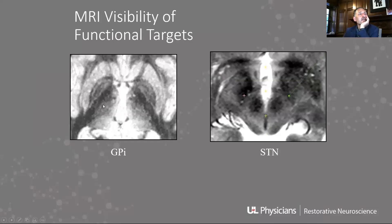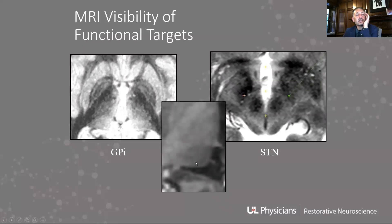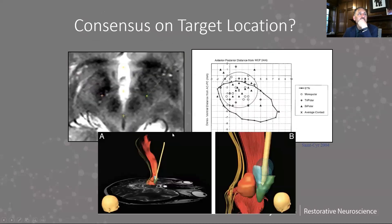Some of these targets are very visible, which is great. The STN is a little less so, and even with the best imaging today, the thalamus is a bit of a mystery — we sort of know that VIM is here, but you can't really see it. Even with the best imaging, you can't see all of these targets. DTI may be helpful in improving some of these, but it's clear there's really no consensus on target location.